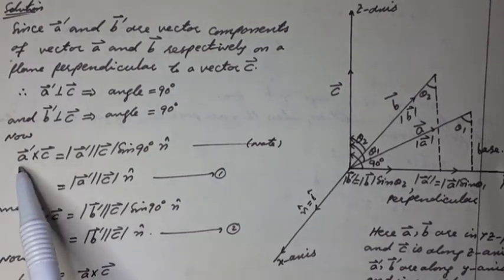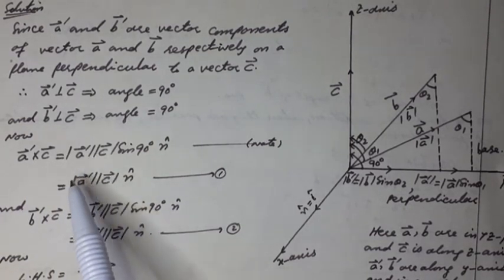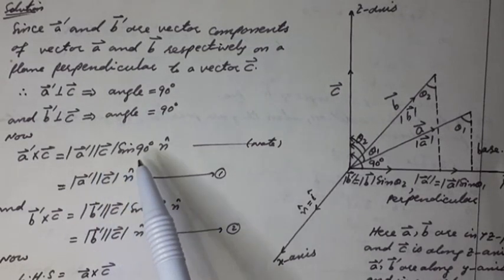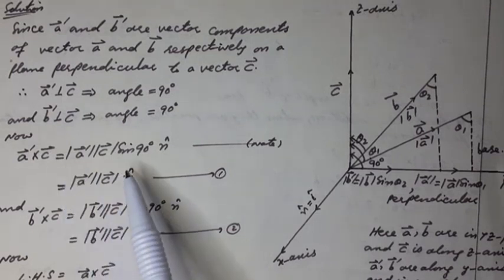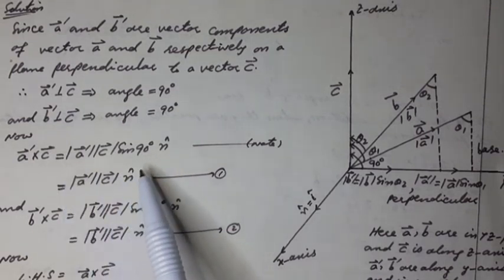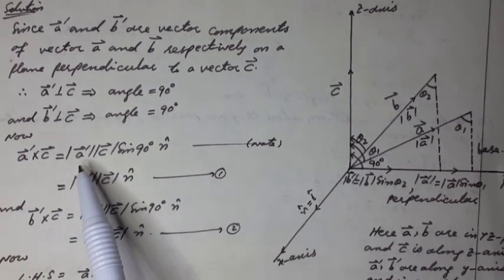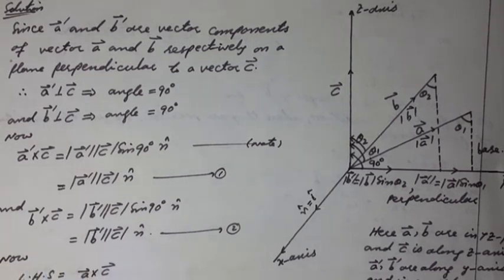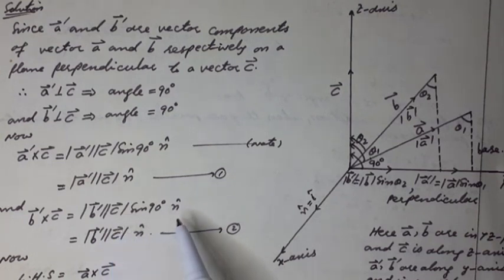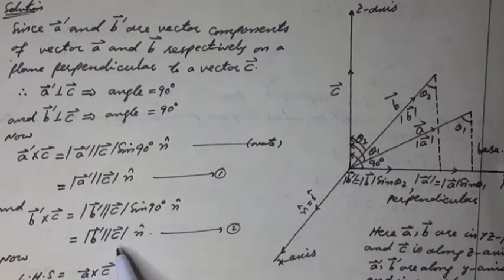Now, a-dash vector cross c vector can be written as: a-dash vector magnitude times c vector magnitude times sin 90 degrees times n-hat, which equals a-dash vector magnitude times c vector magnitude times n-hat. This is Equation 1. And b-dash vector cross c vector equals b-dash vector magnitude times c vector magnitude times sin 90 degrees times n-hat, which equals b-dash vector magnitude times c vector magnitude times n-hat. This is Equation 2.